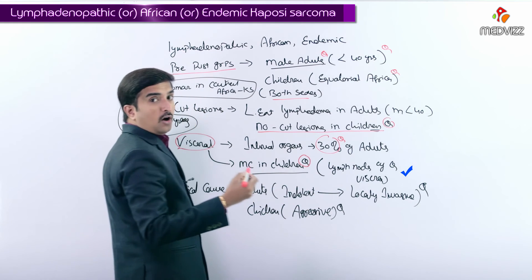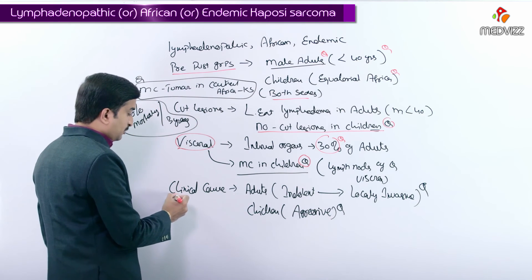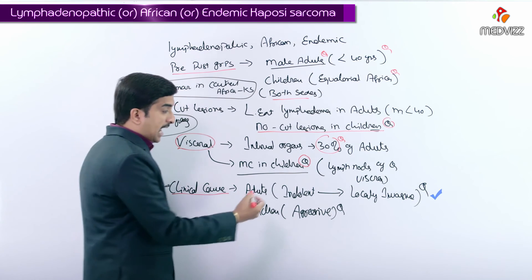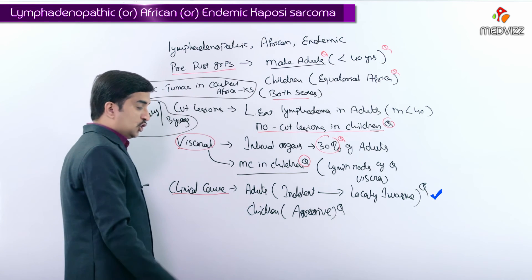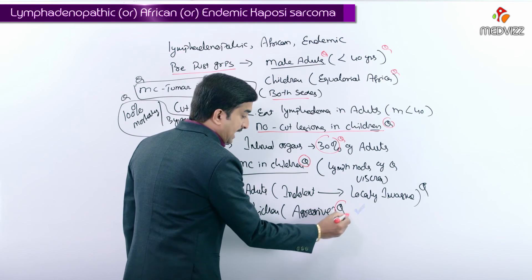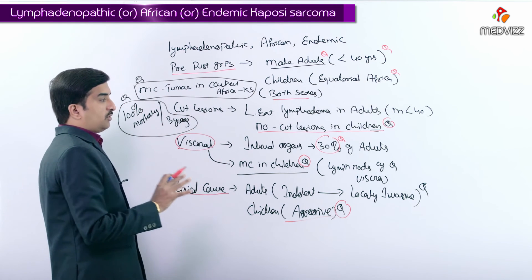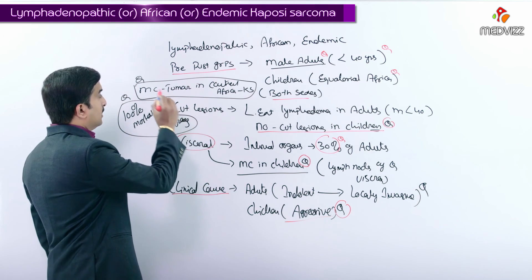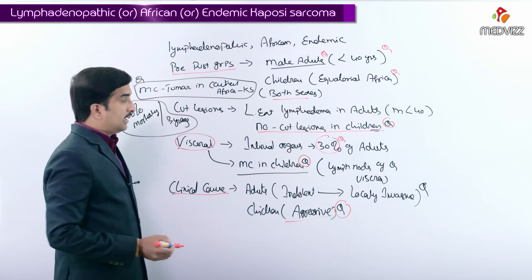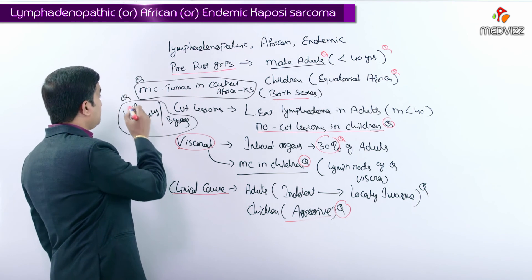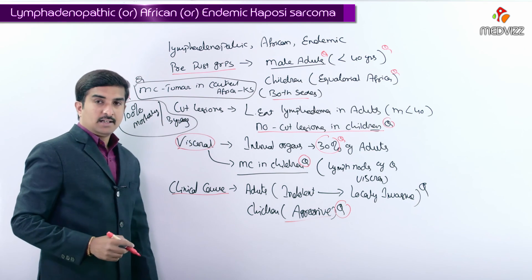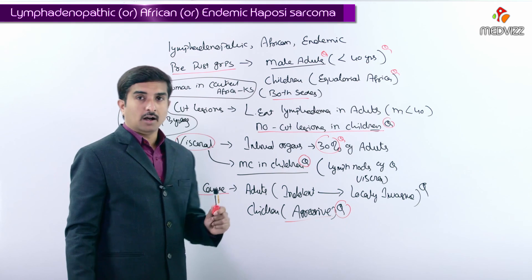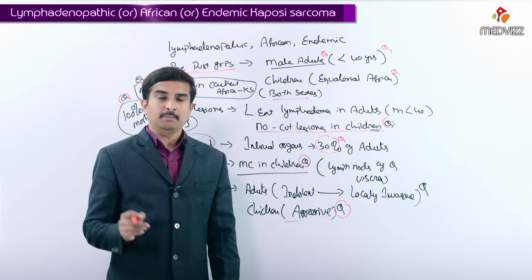Visceral involvement is more common in children, often involving lymph nodes of the viscera and internal organs, as well as lymph nodes at distant sites. Regarding the clinical course, adults may present with indolent to locally invasive tumor, but in children it is often aggressive. The most common tumor in central Africa is Kaposi sarcoma, with 100% mortality within 3 years, concluding the important MCQ points for the endemic Kaposi sarcoma.